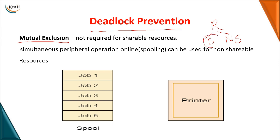For a non-shareable resource, mutual exclusion is required because when one process is using the resource, you don't want another process to use it at the same time. But to prevent a deadlock, you want to make the mutual exclusion condition false — you want no mutual exclusion.